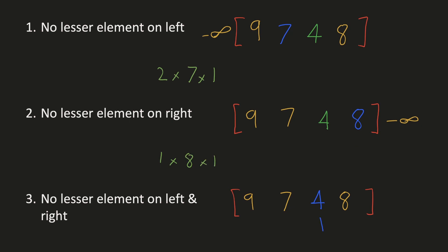In our third example, 4 is the smallest element in the array. Hence, there are no smaller elements on the left or the right. Ideally, there should be 3 elements on the left and 2 elements on the right. Applying our techniques, minus infinity becomes both the previous and the next smaller element for 4. The difference in their indices would be 3 and 2 respectively, which is what we want. We would add 3 × 4 × 2 to our result. Hence, by adding minus infinity on both ends, this solves all 3 edge cases.